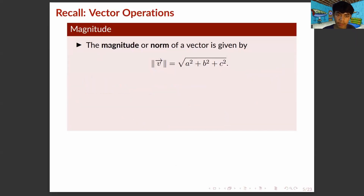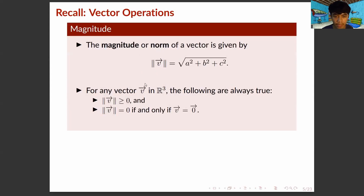Here we have the magnitude. The magnitude or norm of a vector is given by the square root of the sum of the squares of the components of vector V. For any vector V in R3, the magnitude of vector V is greater than or equal to 0, and the magnitude equals 0 if and only if the vector is the zero vector.